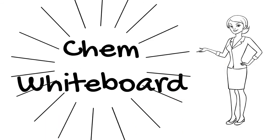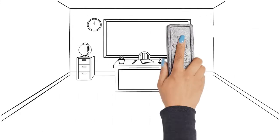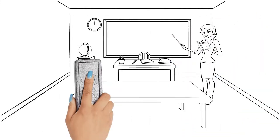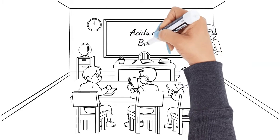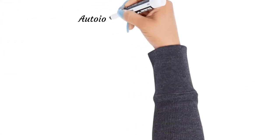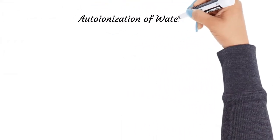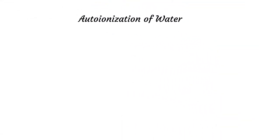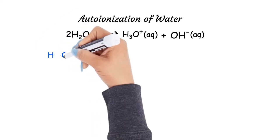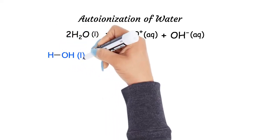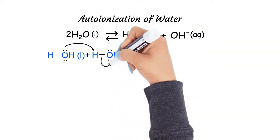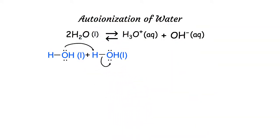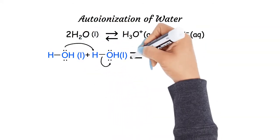Welcome to Chem Whiteboard. In this video we will review and summarize acids and bases. Let's consider one of the most critical reactions in chemistry: the self-ionization of water molecules, or the auto-ionization of water. Here, one water molecule will gain a proton and the other will lose a proton.